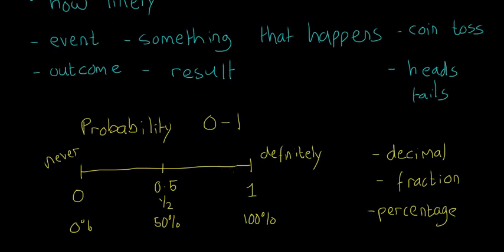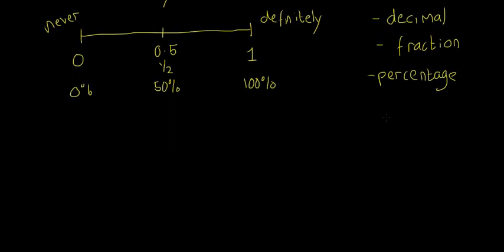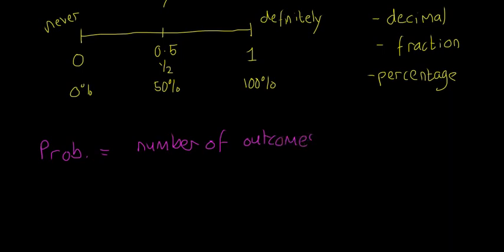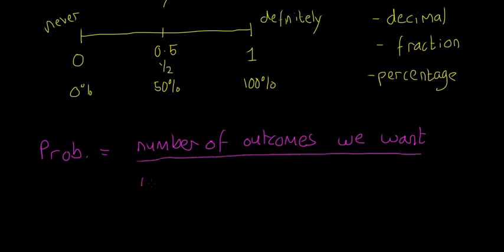We're going to look at a brief formula for probability. Probability is equal to the number of outcomes we want divided by the number of possible outcomes.